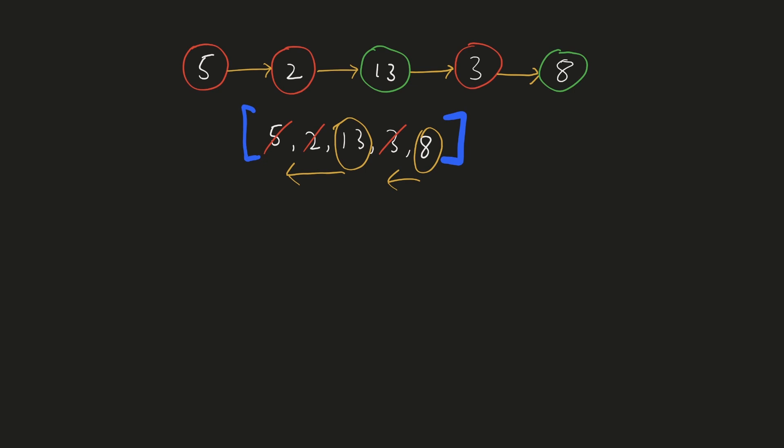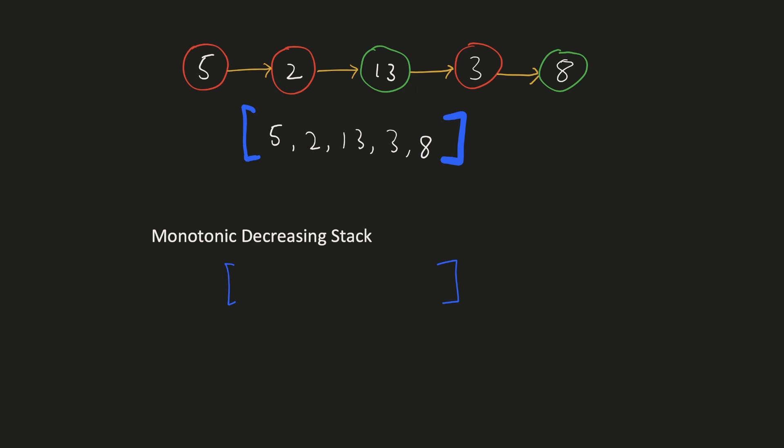This operation has to be done as efficiently as possible. There is a data structure which is optimized just for this. It is called a monotonic decreasing stack and the numbers on it are in a decreasing order. To ensure that order, for each element, we'll check all the elements on the stack. If they are lesser than our number, then we'll remove them. So only numbers which are greater than our current number will remain in the stack.